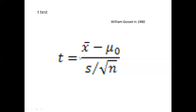This is the formula for the t-test: this is the sample mean, this is the population mean, this is the standard deviation, and this is the square root of the number of observations.